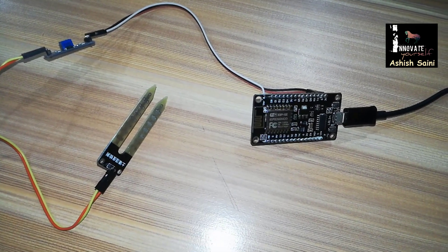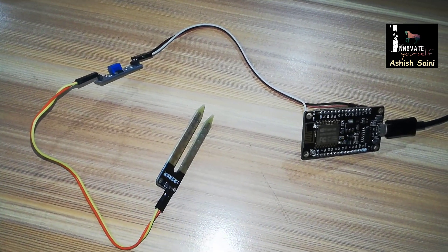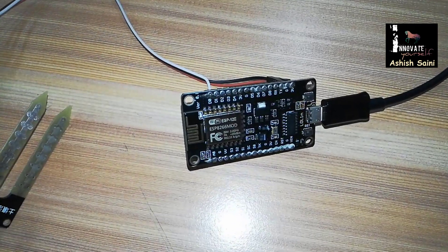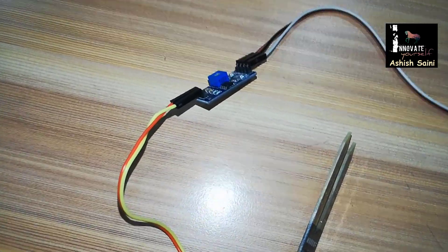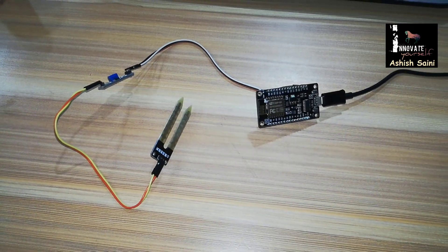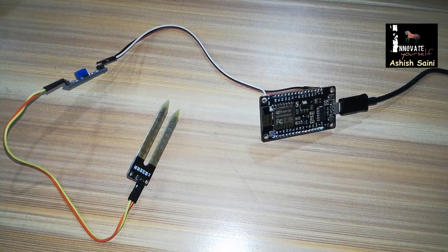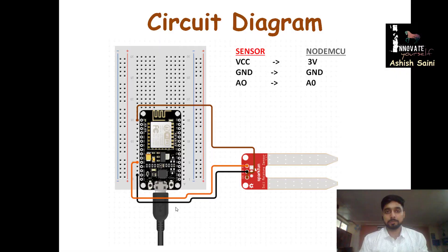Here we have the connections for your NodeMCU with your soil moisture sensor for uploading real-time data on the web server. This is the NodeMCU, connected using male-to-female jumpers to the module connected to the soil moisture sensor. Now we can start writing the program so that we can upload the real-time data from the soil moisture sensor to the web server.